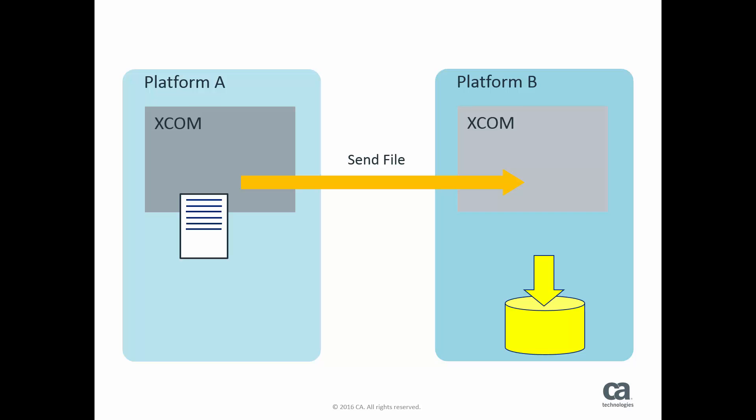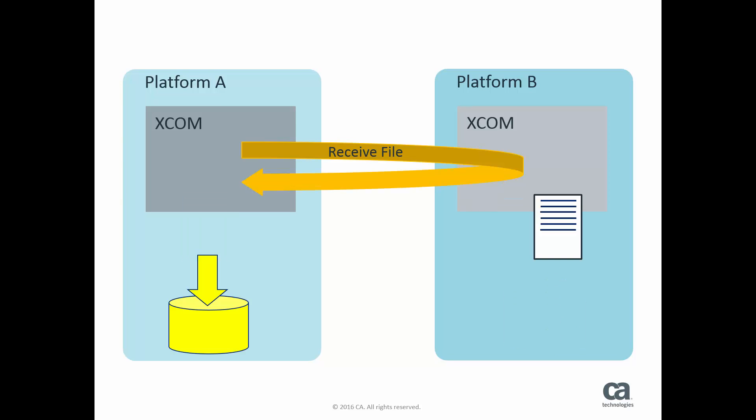What can be transferred? First of all, we can transfer any kind of file from platform A to platform B. When this transfer is initiated on platform A, we are sending that file to the receiver. On the receiving side, that file is stored at the location we determine by setting the parameters for that transfer. Instead of sending a file, we can also receive one via XCOM. The file which is received is stored at the location we have determined for that transfer.